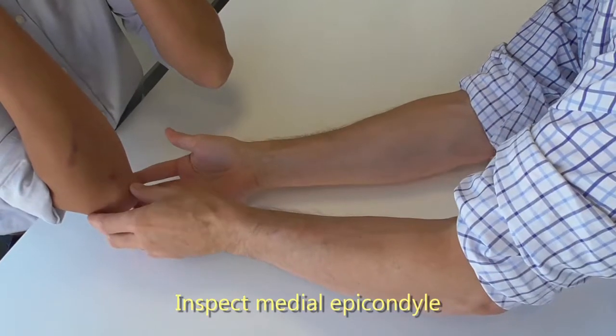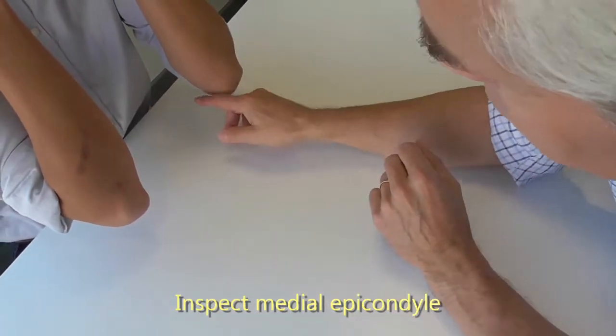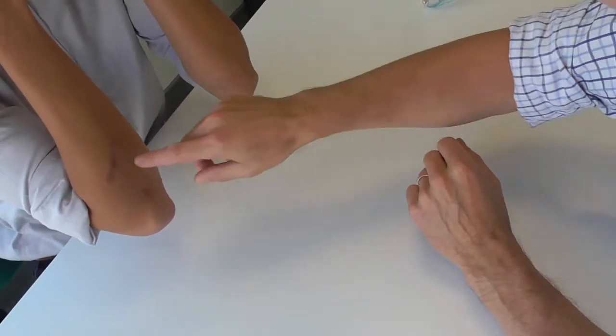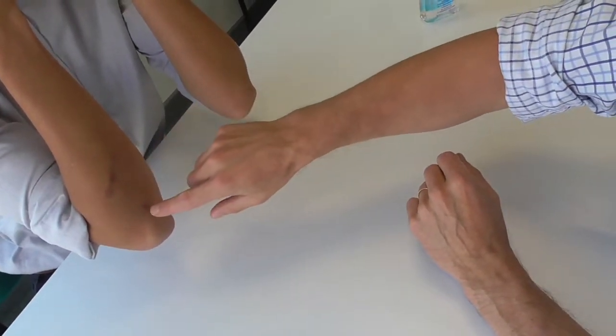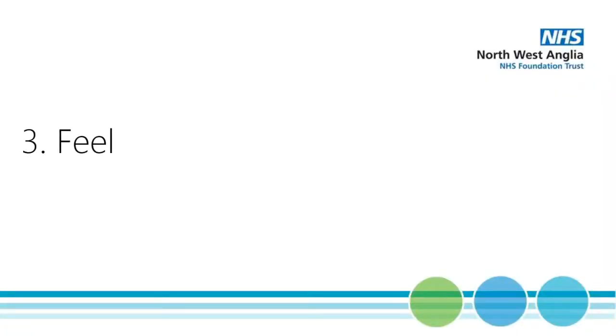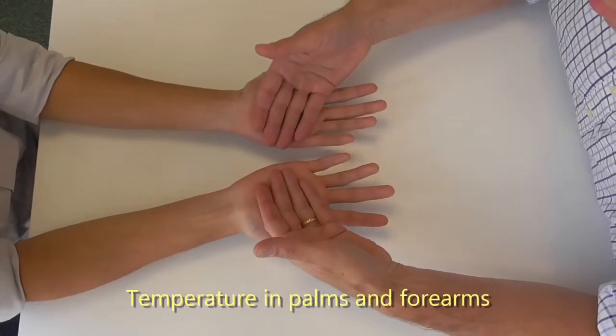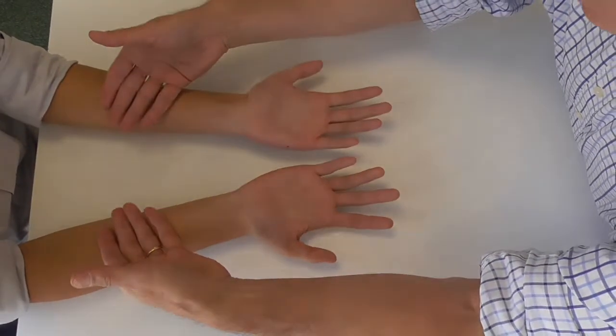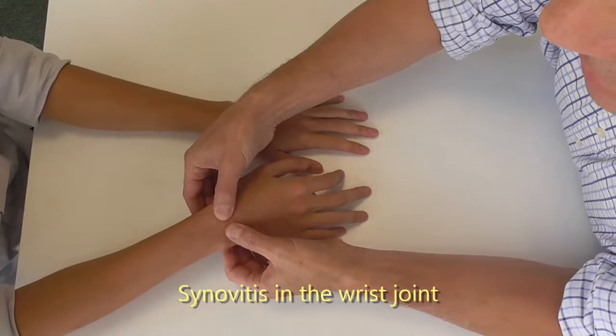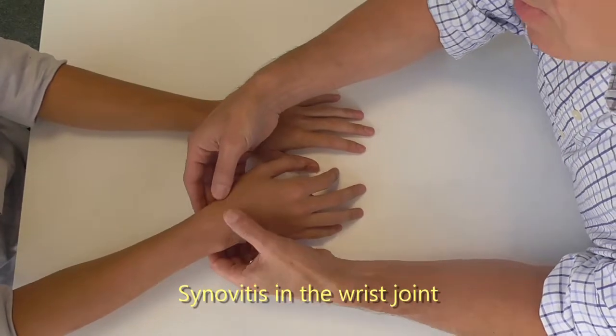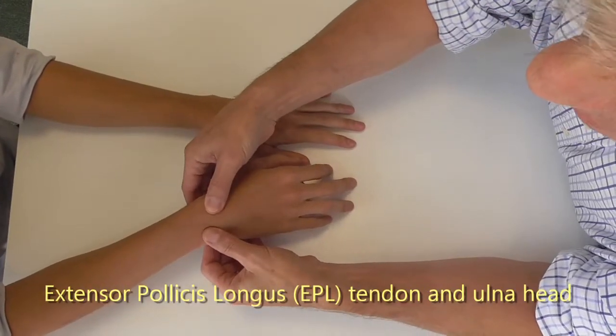I'm just checking to see if there's any scars on the side around the medial epicondyle, and there's a traumatic scar on the forearm. I'm going to feel for temperature in the palm, both sides, and feel in the forearm. I'm starting to feel for synovitis in the wrist joint, and obviously feel the EPL tendon, and moving around to the ulna head.